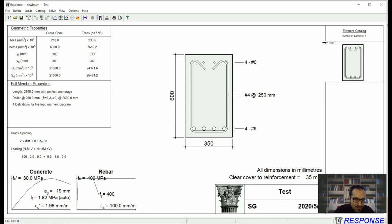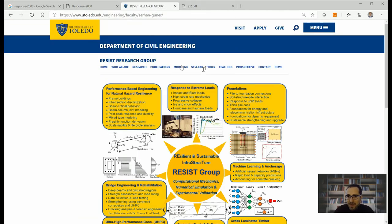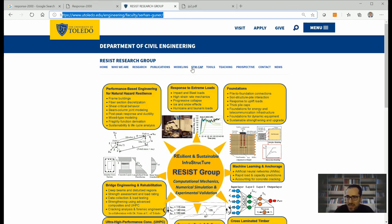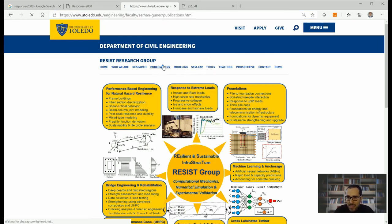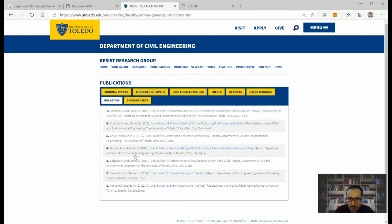In order to get a little bit more information about reinforcement properties, we created a user bulletin. You can visit our university website which is this address and you can go into publications. You can find also lots of other things but I'm just going to show you user bulletin number five.